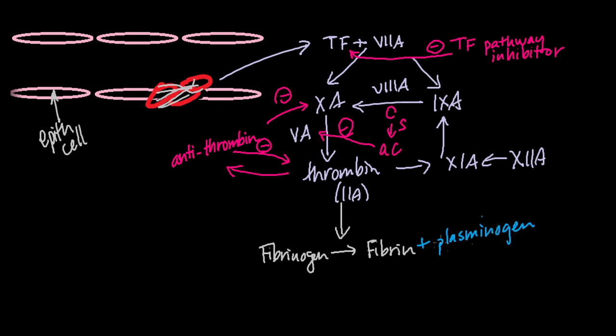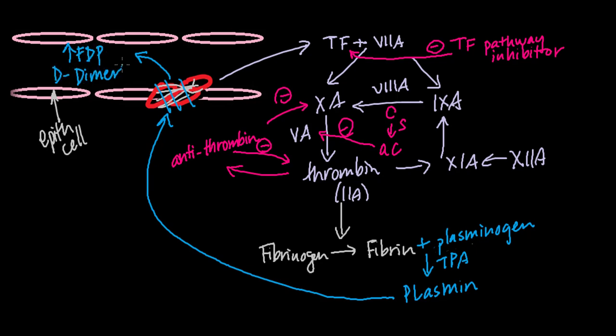Finally, the clot is removed with the activation of plasmin. Plasminogen binds fibrin and tissue plasminogen activator, which converts plasminogen to proteolytic plasmin. Plasmin cleaves fibrin, releasing fibrin degradation products and D-dimers.